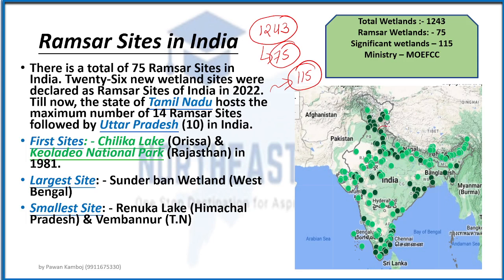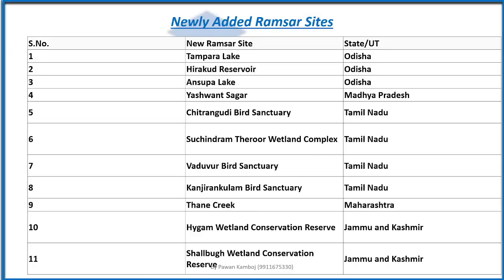On the map, dark green indicates Ramsar sites and light green indicates significant wetlands. The largest wetland is Sundarbans, and the first site India nominated was Chilika Lake along with Keoladeo National Park in Rajasthan. The smallest is Renuka Lake in Himachal Pradesh and Vembanur in Tamil Nadu. Newly added sites include Tampara Lake, Hirakud Reservoir, and Ansupa from Odisha; Yashwant Sagar from Madhya Pradesh; Chitrangudi, Vaduvur, Kanjirankulam, Bird Sanctuary from Tamil Nadu; Thane Creek from Maharashtra; and Hygam Wetland and Shallabugh from Jammu & Kashmir.